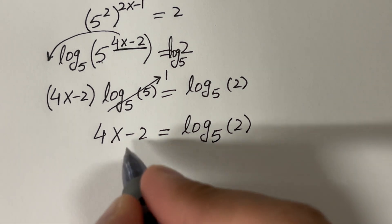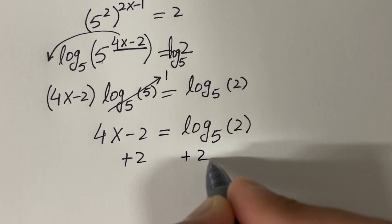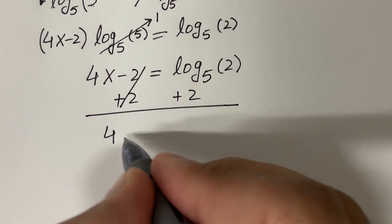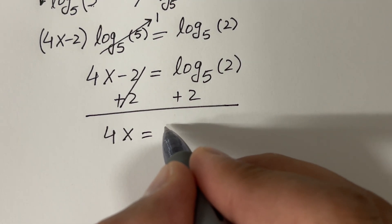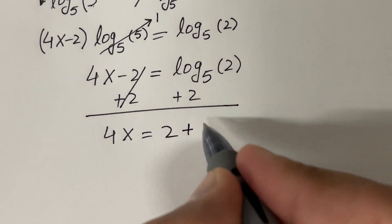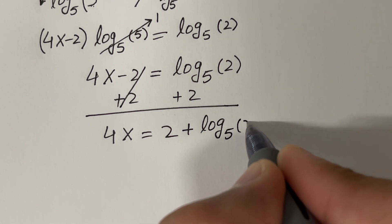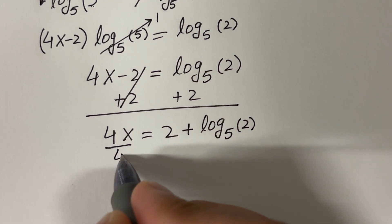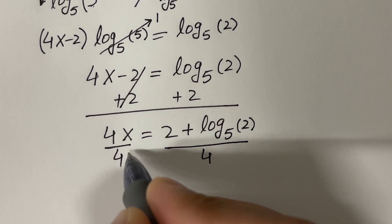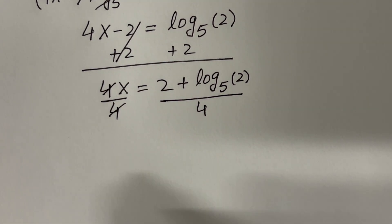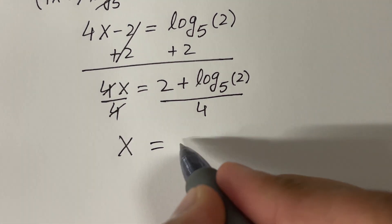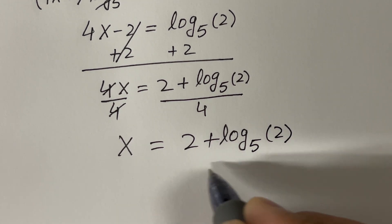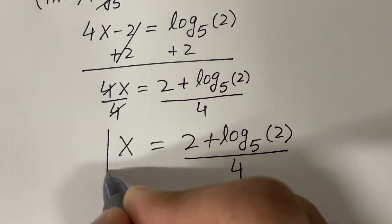We want to find the value of x, so let's add 2 on both sides. So 4x is equal to 2 plus log base 5 of 2. Finally, let's divide by 4 on both sides. Then the value of x is 2 plus log base 5 of 2, divided by 4.